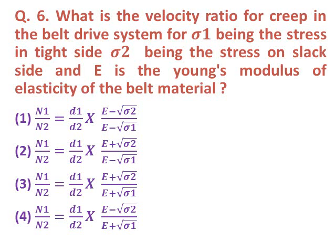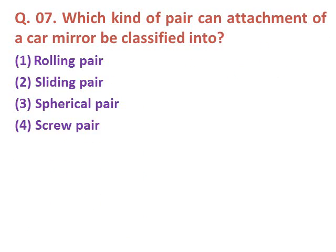Question six: What is the velocity ratio for creep in the belt drive system, where sigma one is the stress in the tight side, sigma two is the stress on the slack side, and E is Young's modulus of elasticity of the belt material? The correct answer is option three: N1 upon N2 equals D1 upon D2 multiplied by (E plus root of sigma two) upon (E plus root of sigma one).